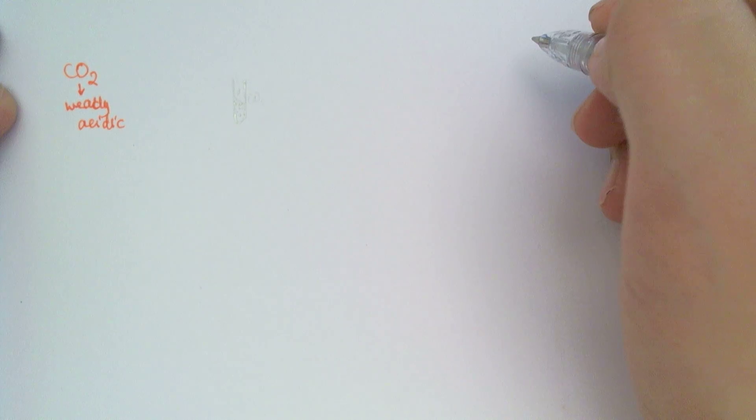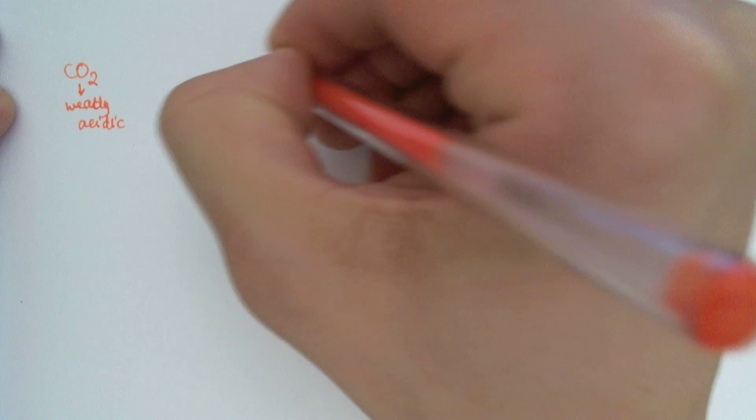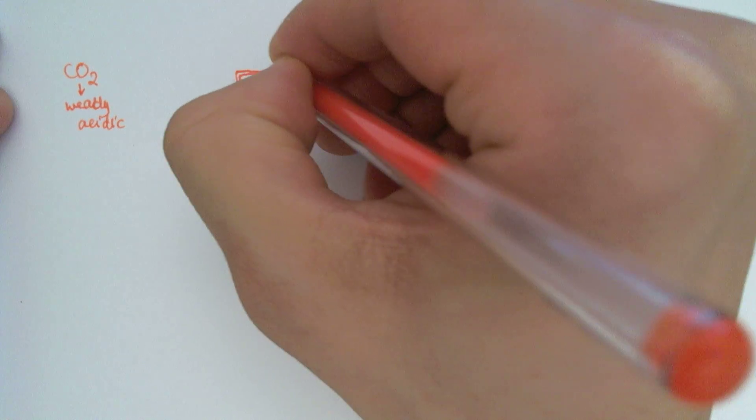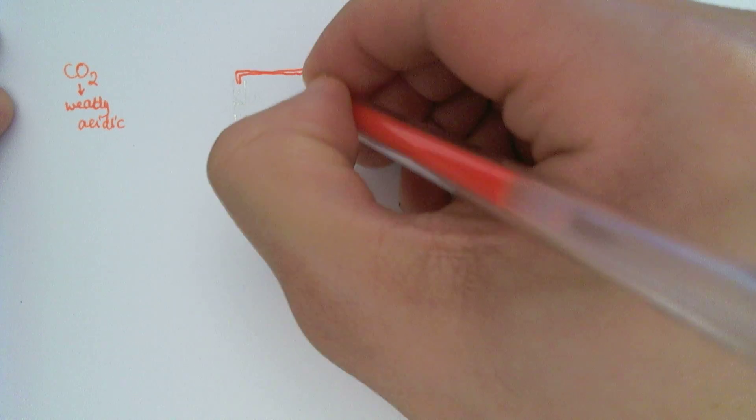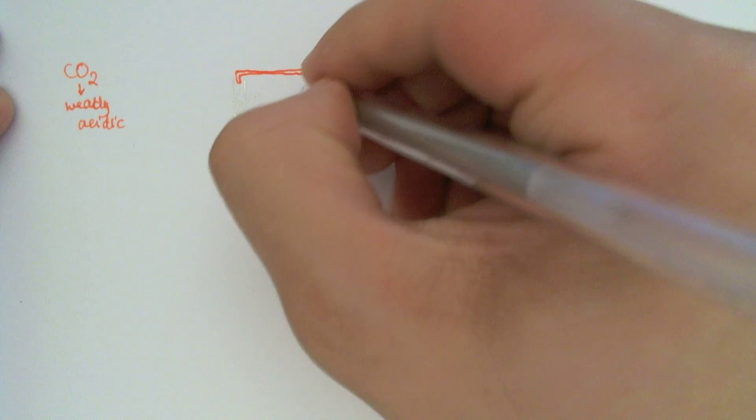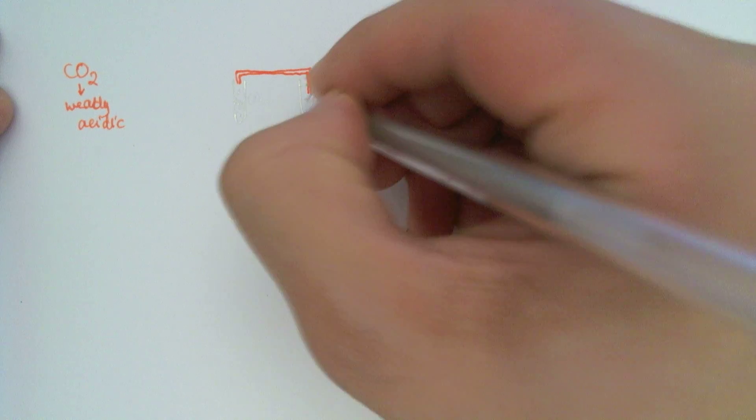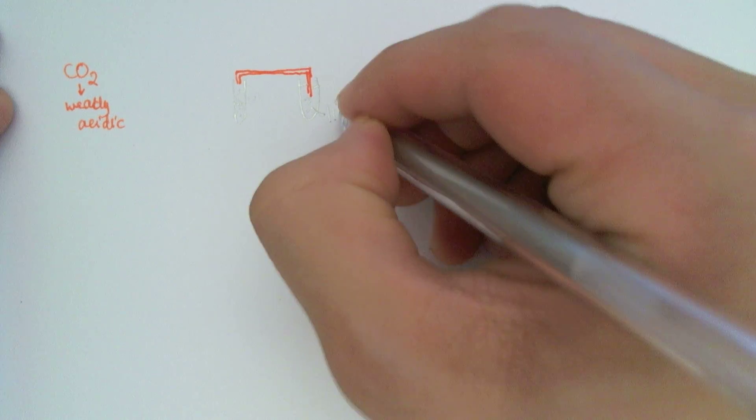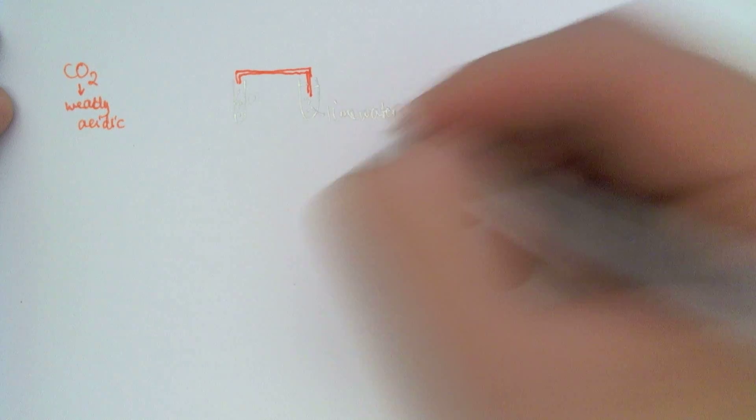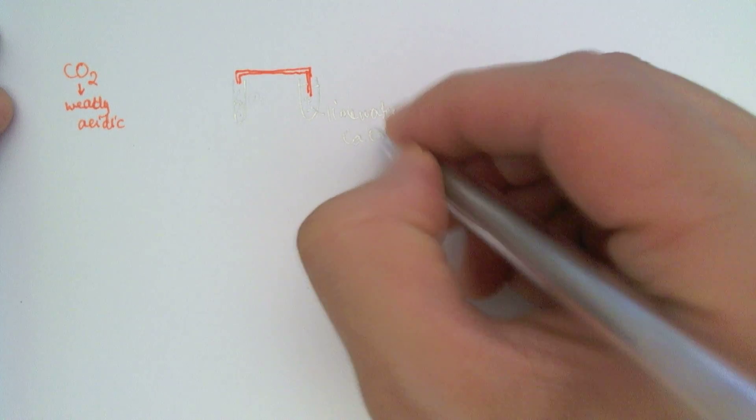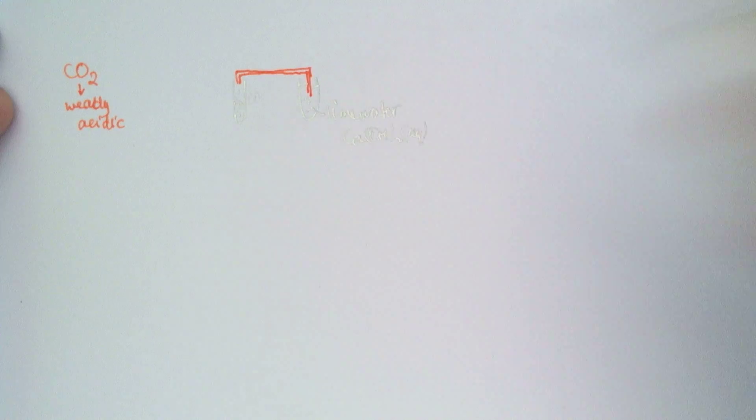And if some carbon dioxide is being released, we will take that carbon dioxide and channel it into a test tube filled with lime water. So we have some lime water in this test tube. And lime water is calcium hydroxide aqueous.